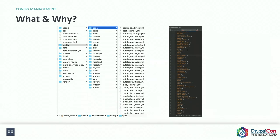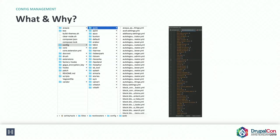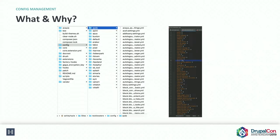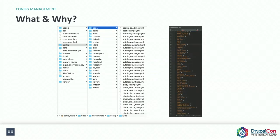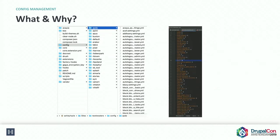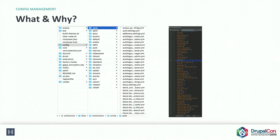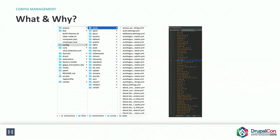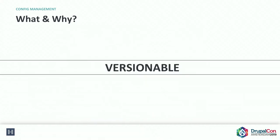We jumped straight in and talked about what is config and why do we want to use it. In simple terms, we're just capturing site settings into code. The great thing about this is it makes your settings versionable, portable, and shareable. In the end, it's just a bunch of YAML files — YAML files that roughly represent our database dump, but being separated into YAML files, we can break them up and package them in different ways. So they are versionable, shareable, portable, dividable, reusable — config is great.